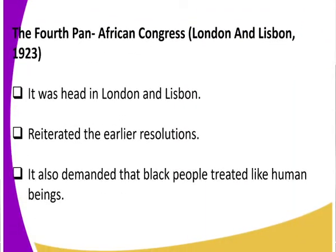Then we have the fourth Pan-African Congress, which was held in London and Lisbon in 1923. What were some of the objectives or achievements of the fourth conference? It basically stressed the recommendations from the earlier conferences — the first, second, and third conferences. It also demanded that black people be treated like human beings. Remember, slaves were not regarded as human beings, so they demanded that African people be treated as human beings.